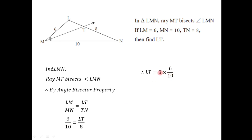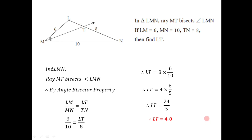Dividing by 2, we get 4 times 6 by 5, which is 24 divided by 5. Dividing 24 by 5 gives LT equal to 4.8. So this is the length of segment LT. This is how we can solve examples using the angle bisector property. I hope you understand this concept. Thanks for watching.